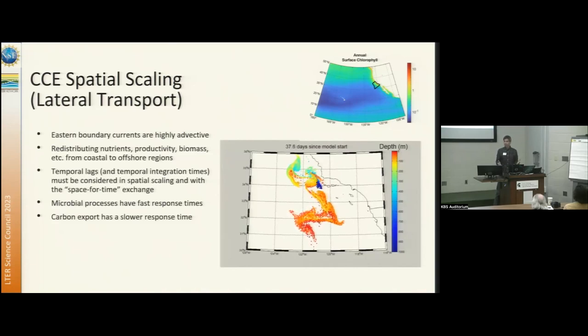They're spreading a couple hundred kilometers before they sink to a depth of 100 meters in some cases. So really, this is redistributing the nutrients, the productivity, the biomass, the communities, everything across our ecosystem.